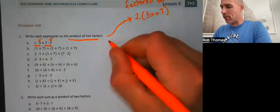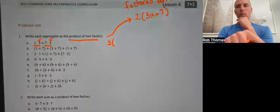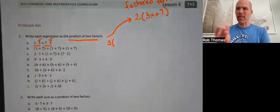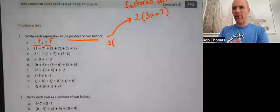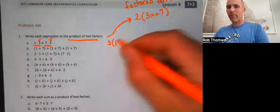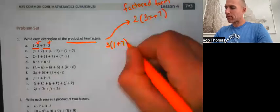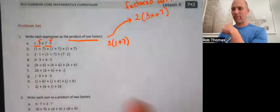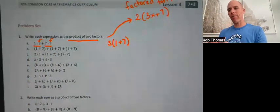We start by writing a three and then opening a parenthesis. What goes in the parentheses is what's left from each term after we divide by three — which cancels that three out. So 1×3 divided by 3 leaves just 1, and 7×3 divided by 3 leaves just 7. These two are equivalent expressions — they both come out to 24.